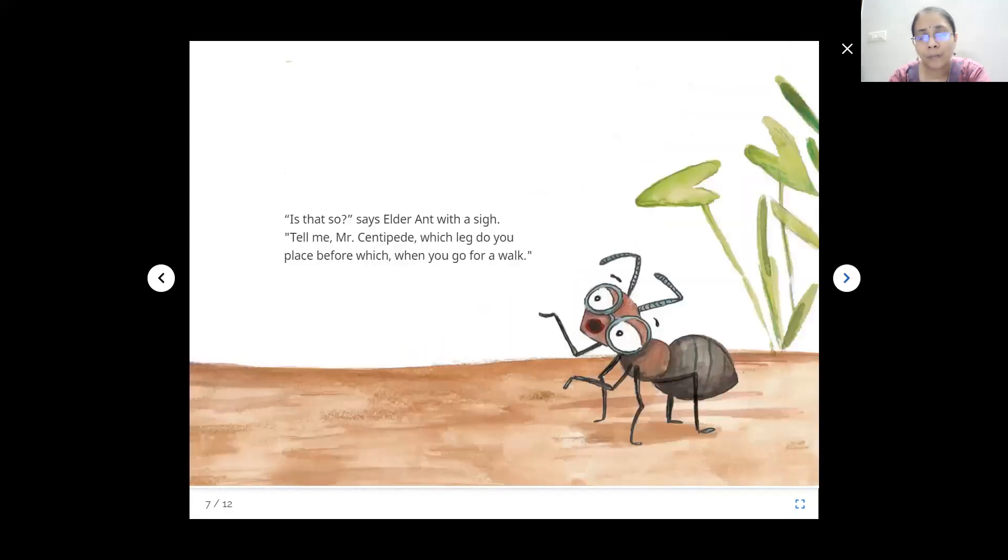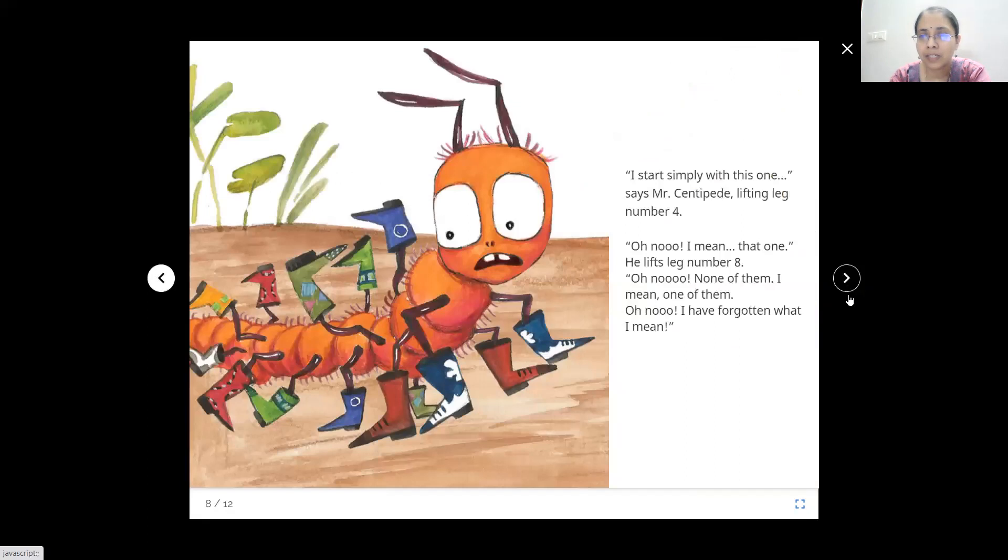But then he walks all the time, all right. So, normally he knows. Is that so, says Elder Ant with a sigh. Tell me, Mr. Centipede, same question again. Which leg do you place before which when you go for a walk? He doesn't remember. He doesn't think about it when he's walking.